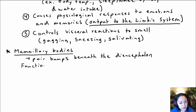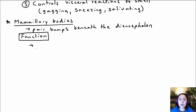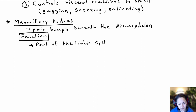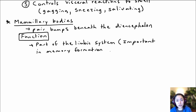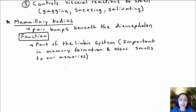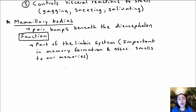So what do the mammillary bodies do? The mammillary bodies are considered part of the limbic system. Specifically, they have some role in memory formation and also a role in associating smells to our memories. Olfaction is closely linked to memories and emotions, and so it is considered part of our limbic system.